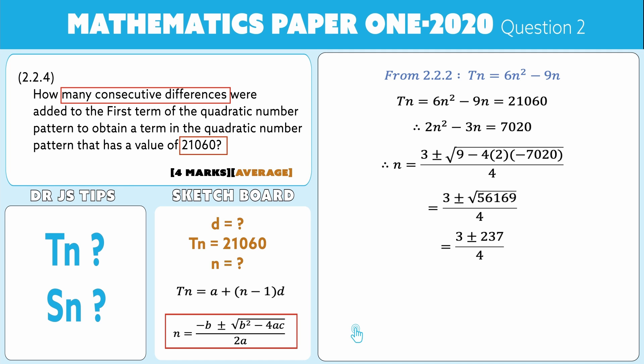Now folks, that's what you must use to check your term number. Now look carefully, your term number must be positive first of all, because term numbers are natural numbers. So you're only going to use the positive: n is equal to 3 + 237 divided by 4, and that gives you 240 that is divided by 4, and that leaves you with 60. So if the question was which term number is equal to this 21,060, you would have had your answer by now, but that's not the question.